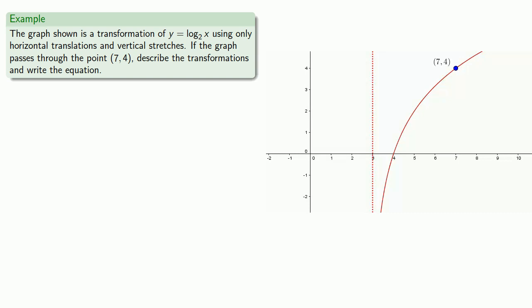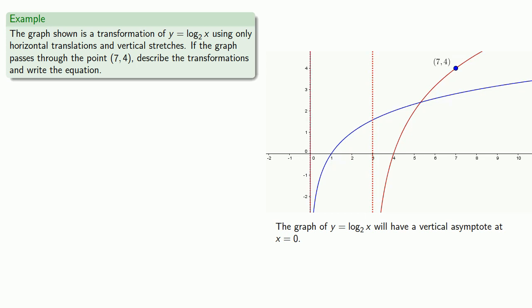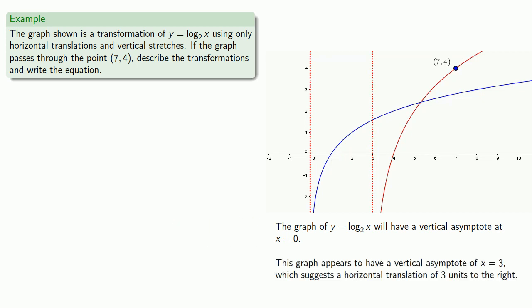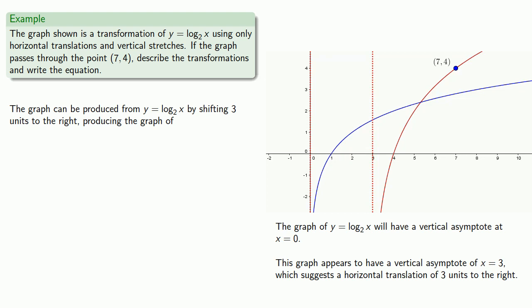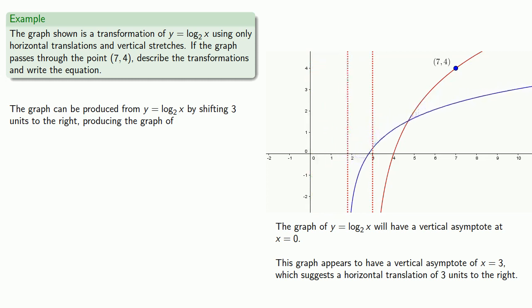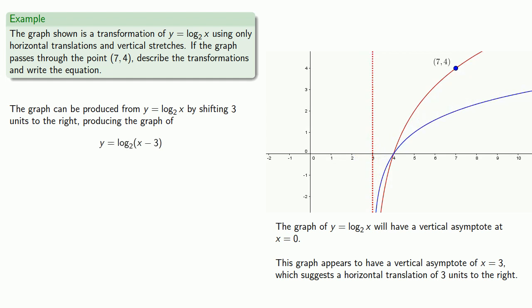The graph of y equals log x will have a vertical asymptote at x equals 0. This graph appears to have a vertical asymptote at x equals 3, which suggests a horizontal translation of 3 units to the right. So we'll make that our first transformation: the graph can be produced from y equals log base 2 of x by shifting 3 units to the right, producing the graph of y equals log base 2 of x minus 3.